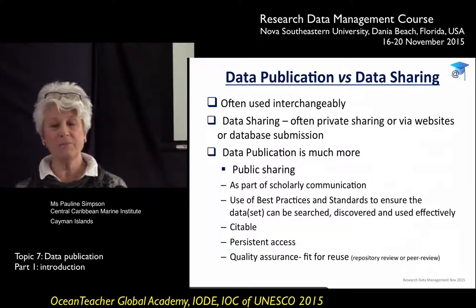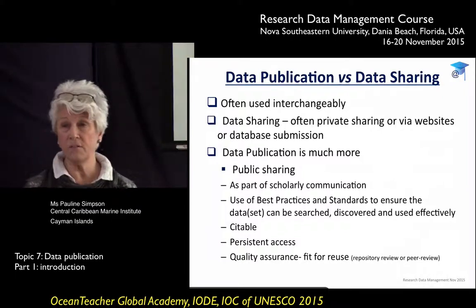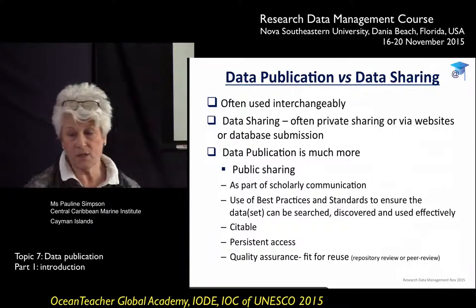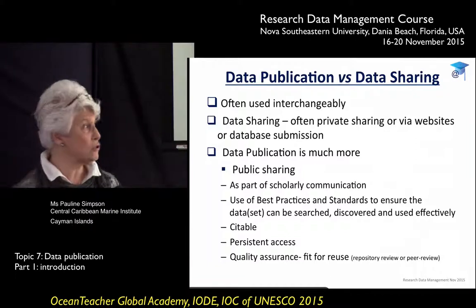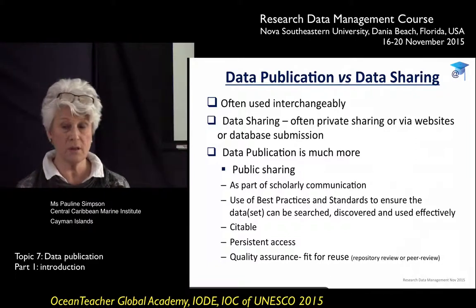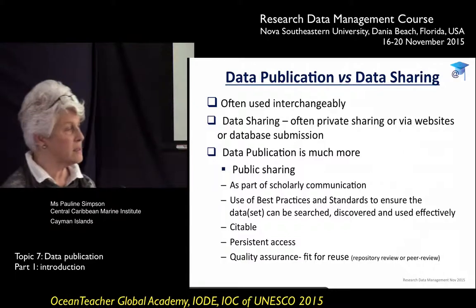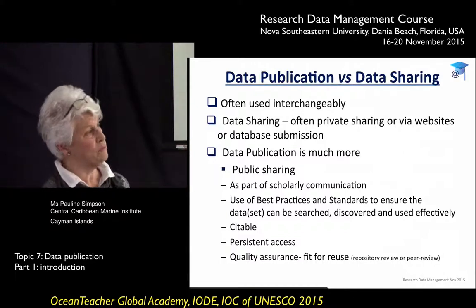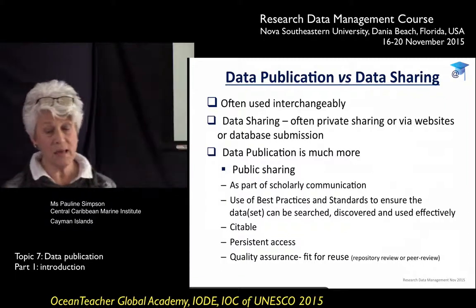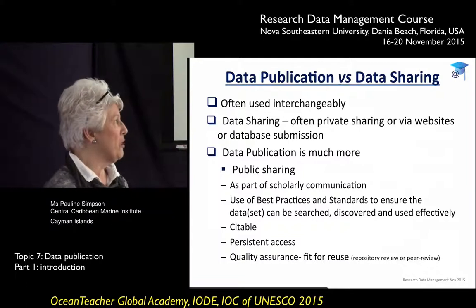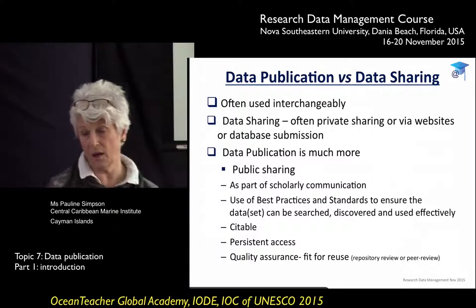Data publication is very much part of the scholarly communication cycle. It uses best practices and standards, and ensures data can be searched, discovered, and effectively used. It has to be citable so we can find it, with persistent and permanent access, and there has to be some sort of quality assurance review process for data sets within the record.